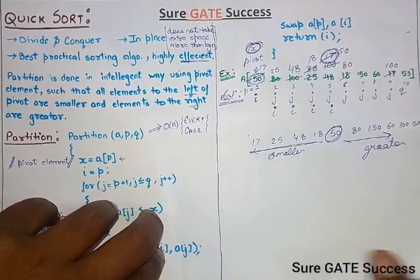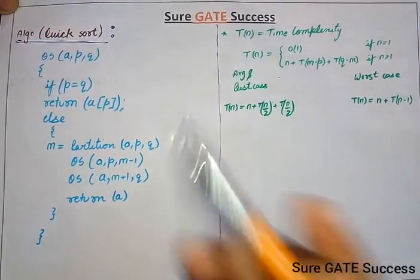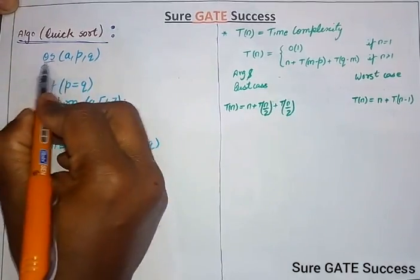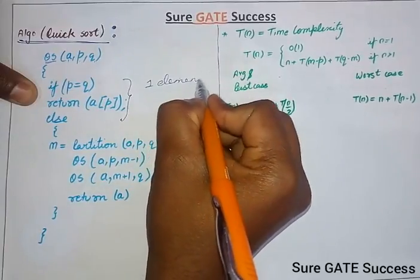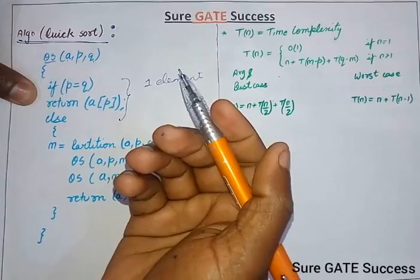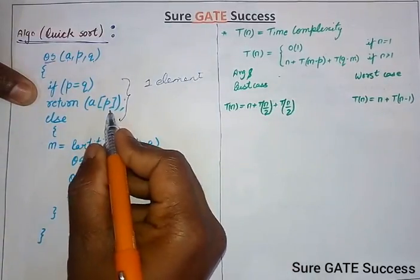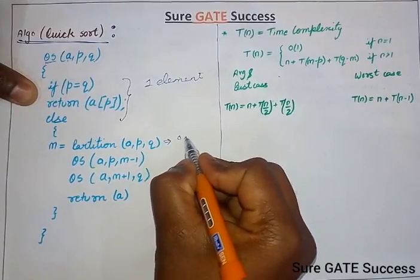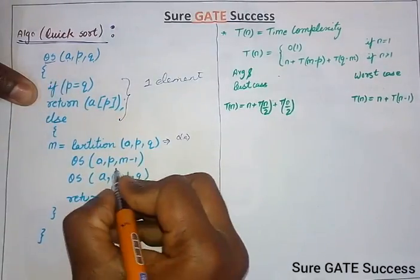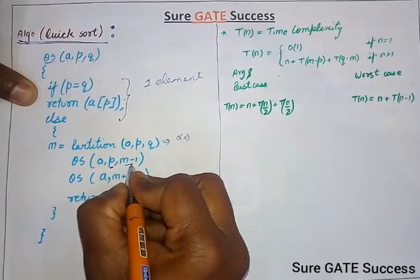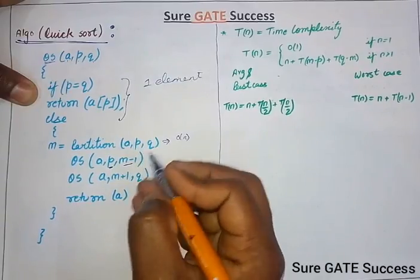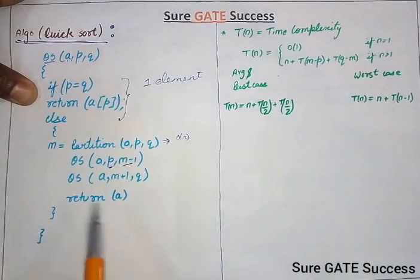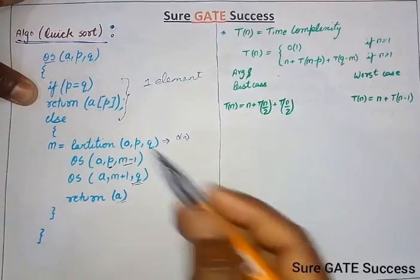Now let's understand the quicksort algorithm. In quicksort, A is the array, P is the starting index, and Q is the last index. First we check the base condition: if there is only one element, we just return it. If there are more than one element, we first run the partition algorithm to find midpoint M. Then we apply quicksort recursively from P to M minus 1, since the M-th position is already fixed and sorted. Then we apply quicksort from M plus 1 to Q, and finally return the array.